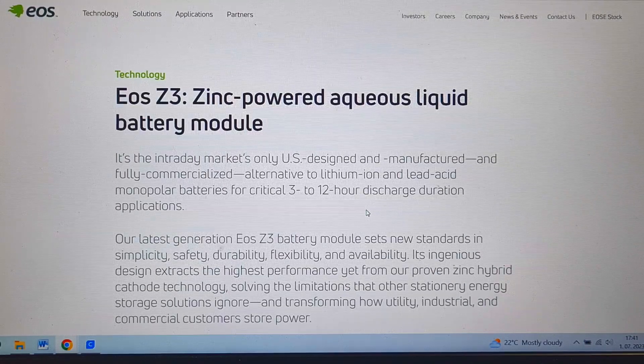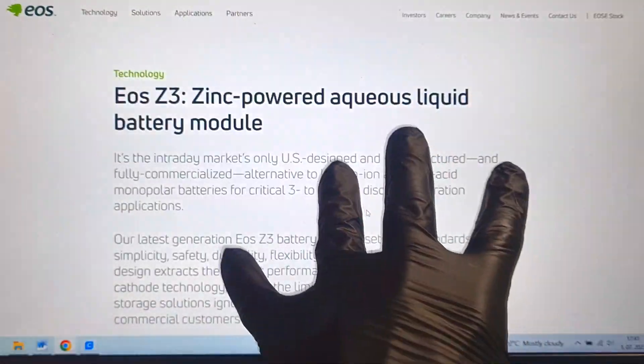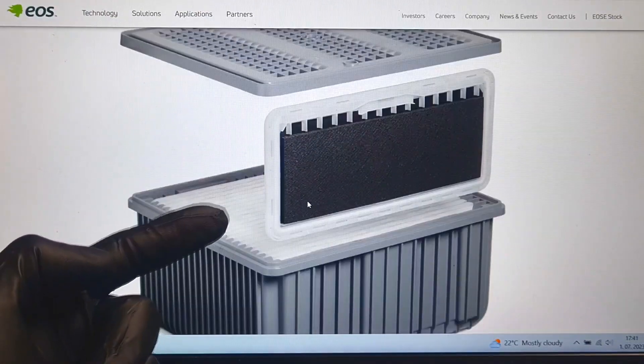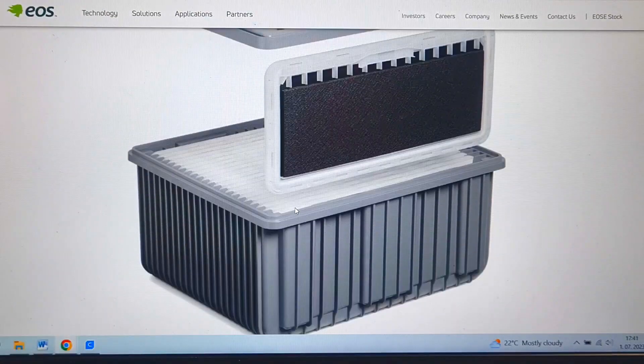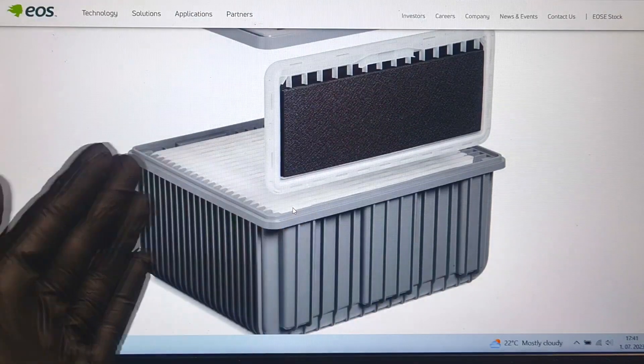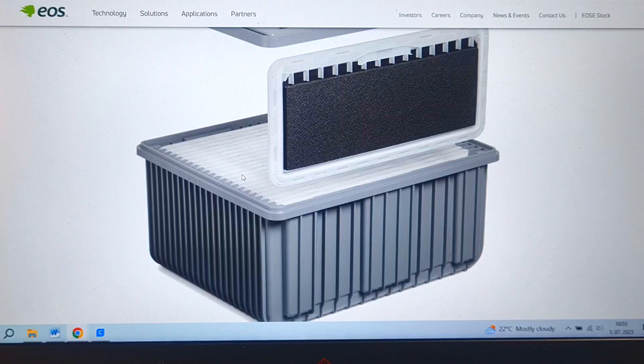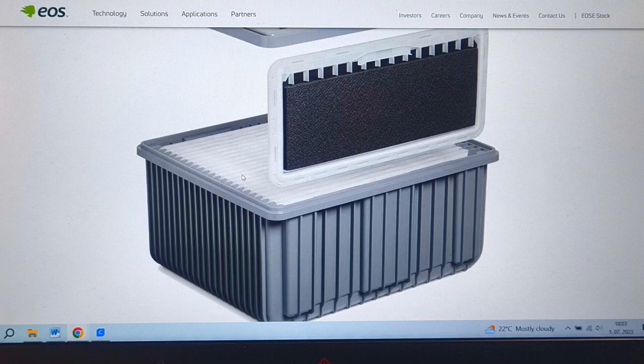And now let's make a look into EOS Z3 battery. Right now I'm on the page of EOS Energy and over here is this Z3 battery, which is actually some container which is filled with multiple cells. And in my mind this kind of battery and cell design is really nice because it's really simply made.